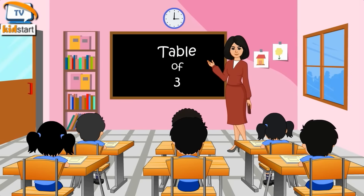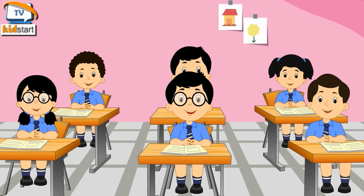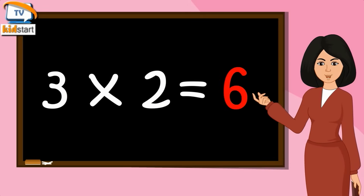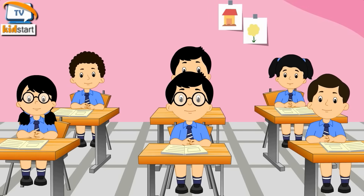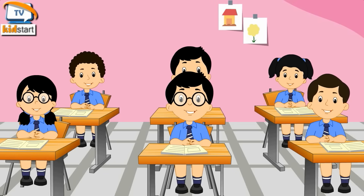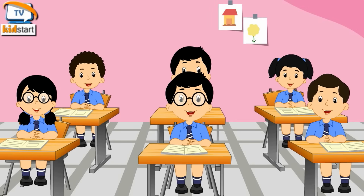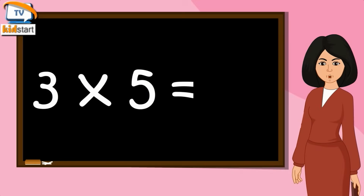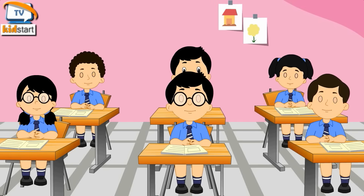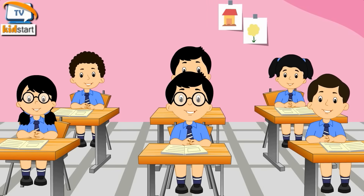Table of 3. 3 times 1 is 3. 3 times 2 is 6. 3 times 3 is 9. 3 times 4 is 12. 3 times 5 is 15.